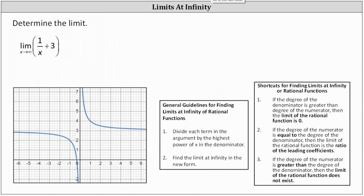First example: the limit as x approaches infinity of (1/x + 3). Since 1/x approaches zero as x approaches infinity, and three is not affected by x, the limit equals three. Verifying graphically: as x approaches infinity and we move right along the graph, the y values approach positive three, and we also have a horizontal asymptote of y = 3.